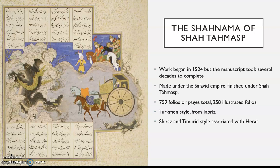The Shahnama of Shah Tahmasp contains 759 folios, or pages, and is made out of fine paper enriched with large gold-embellished borders, written in Nastaliq script. It marks the synthesis of two very important styles in the Persian tradition: the Turkman style from the region of Tabriz, which gives us a lively treatment and bright-colored landscapes and surfaces, and the Shiraz and Timurid style, associated with the region of Herat, which gives us a balanced compositional layout.